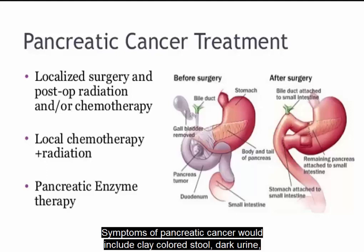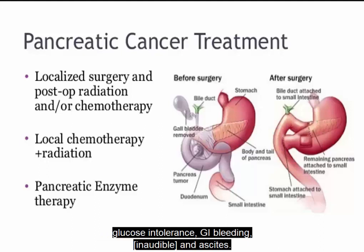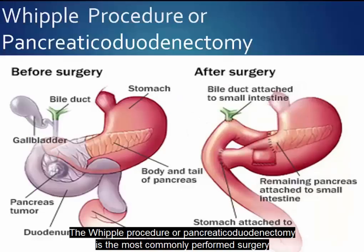Symptoms of pancreatic cancer would include clay-colored stool, dark urine, abdominal pain which is usually vague, weight loss, anorexia, nausea and vomiting, glucose intolerance, GI bleeding, splenomegaly, and ascites. Jaundice could also occur where there are lesions of the pancreatic head.